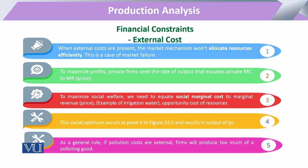Profit is maximized in the business, and profit is the entrepreneur or producer's private benefit. But when we talk about social welfare and welfare economics, it asserts and requires that the social marginal cost should equate the marginal revenue. So while firms equate with the private marginal cost, the requirement for social optimality is the social marginal cost.